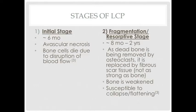Legg-Calvé-Perthes can be classified into four stages. The first is the initial stage, or stage of avascular necrosis, when bone cells die due to disruption of blood flow, lasting several months. The second is the fragmentation stage, when the head of the femur breaks down and fragmentation and resorption occur. Dead bone is removed by osteoclasts and replaced by fibrous scar tissue, weakening the bone and making it susceptible to flattening or collapse during normal daily activity.